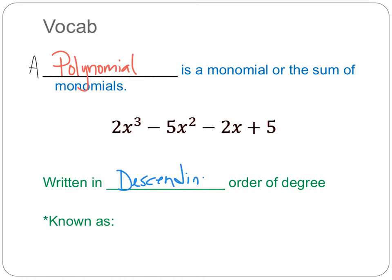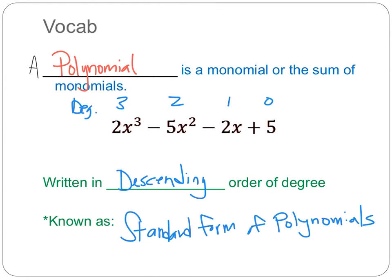Looking at the degrees, we have degree 3, 2, 1, and 0. We write this in descending order, and this is what we call standard form of polynomials. You probably remember standard form from algebra, which means something completely different — but here, standard form of polynomials is simply the way we write polynomials from highest degree to lowest degree.